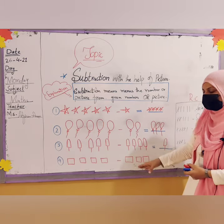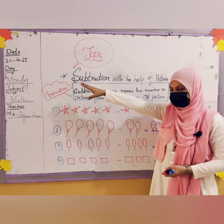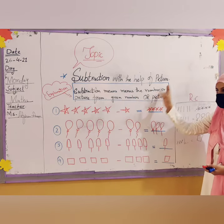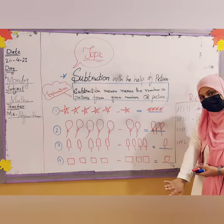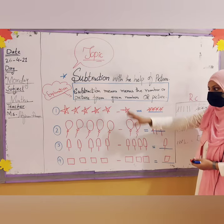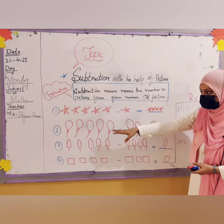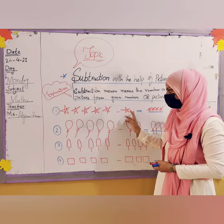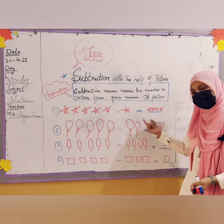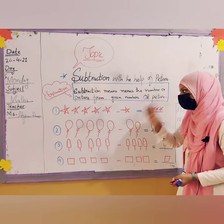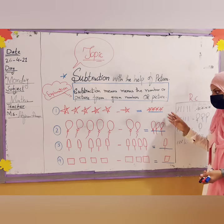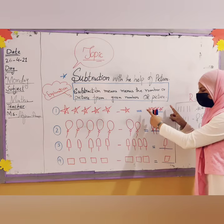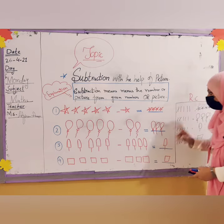So you have to do this work in your copy today. The date is 26, month 4, year 21. The topic is subtraction with the help of pictures — just four questions in your copy. If you want to change the pictures, you can, but keep the same values and follow the same process.